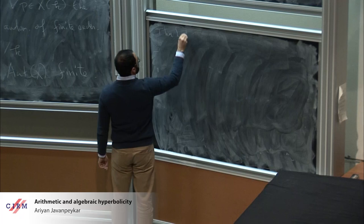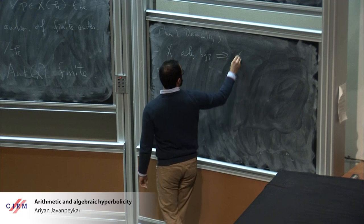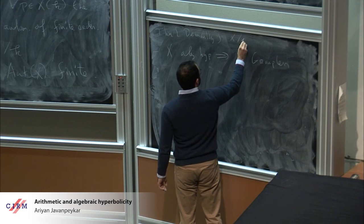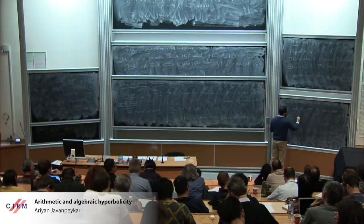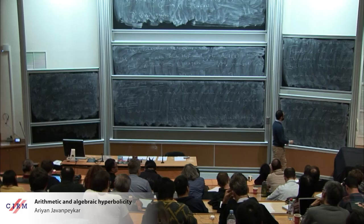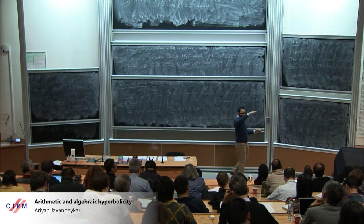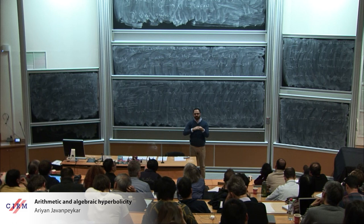Demailly proved that algebraically hyperbolic projective varieties are groupless. And Brody hyperbolic projective varieties are actually algebraically hyperbolic. So Brody hyperbolic is in some sense the strongest, then algebraically hyperbolic, then groupless. But if you believe Lang's conjecture, groupless and Brody hyperbolic should be the same, so everything in between should also be equivalent.